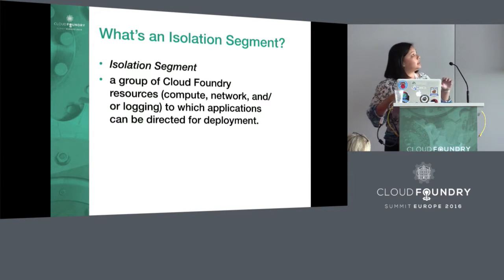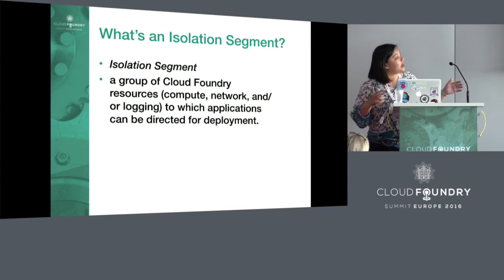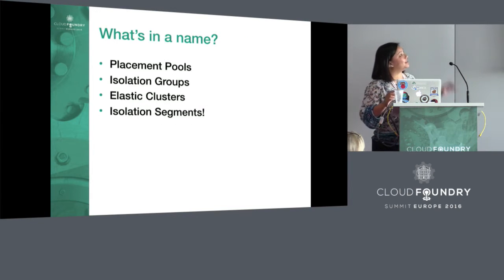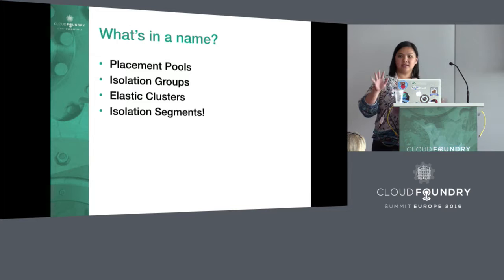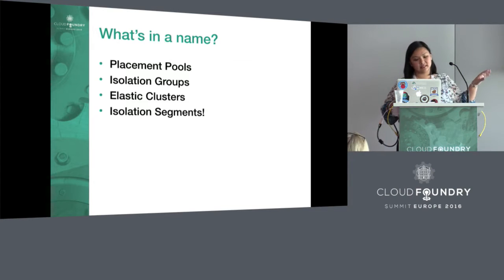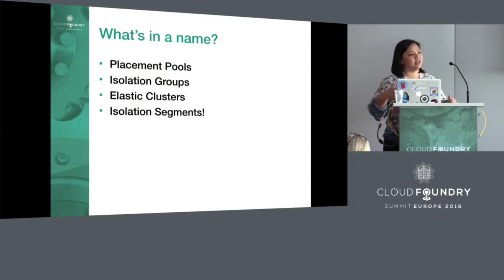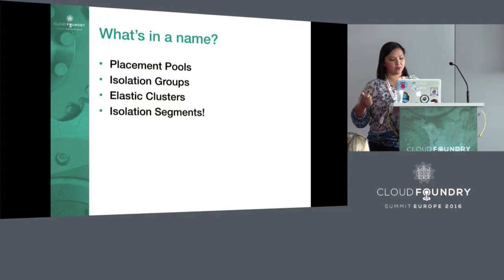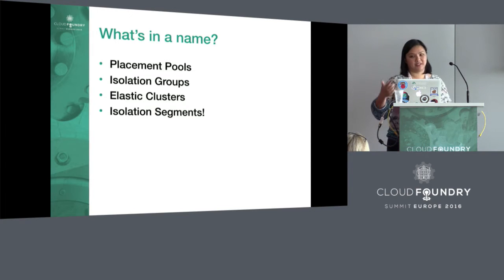So what's an isolation segment? It's a group of Cloud Foundry resources — compute, network, and/or logging — to which applications can be directed for deployment. On naming: we've renamed and reworked this proposal and feature set a few times, run into a few walls. It's been called placement pools, isolation groups, and elastic clusters. We've now settled on isolation segments, thanks to a suggestion from Sandy Cash from IBM. It derives from a discussion of isolation and segmentation requirements as they pertain to PCI DSS. I'm also fond of the word segment, as it's not quite as overloaded as groups, clusters, or zones.